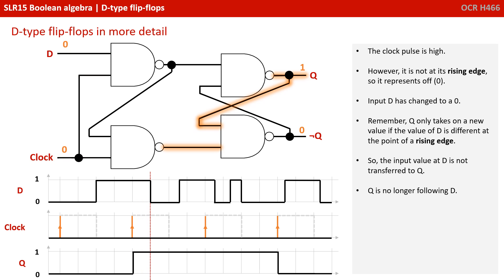If we move on, the clock pulse is high. However, it's not at its rising edge, so it represents as a zero. Input D has now changed to zero. Remember though, Q only takes on a new value if the value of D is different at the point of a rising edge. So the input value at D is not transferred to Q. It has been held or stored. Q, once again, is no longer following D.